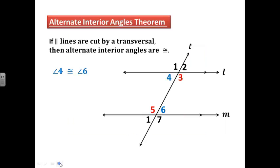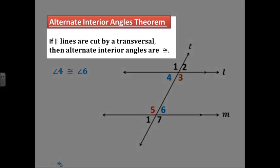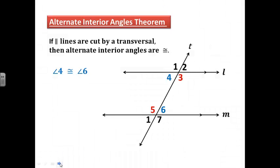The alternate interior angles theorem says that if we have parallel lines cut by a transversal, then alternate interior angles are always congruent. So in this diagram, angle 4 and angle 6 are alternate interior angles — if lines are parallel, they are congruent. Angle 3 and angle 5 are also alternate interior angles, and if lines are parallel, they are also congruent.